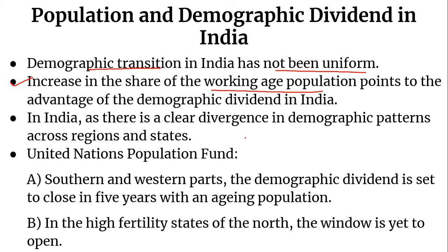In India, there is a clear divergence in demographic patterns across regions and states, so the demographic dividend window is available at different times as age structures differ across states. According to the United Nations Population Fund, in southern and western parts the demographic dividend is set to close in 5 years with the ageing population, whereas in some states it would remain open for 10-15 years, and in the high fertility states of the north the window is yet to open. Thus, India has the advantage of a longer span of the demographic dividend due to the difference in patterns of demographic transition across states.